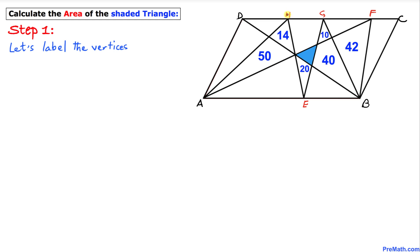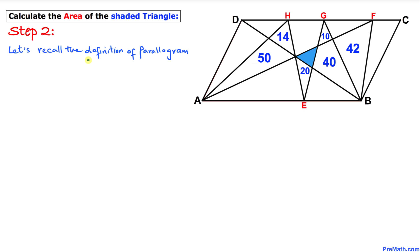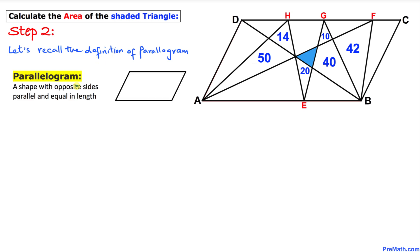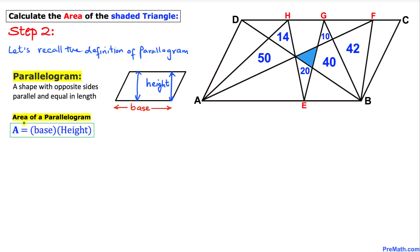Let's recall the definition of a parallelogram: a shape with opposite sides parallel and equal. This side is opposite and equal to the other side, and they are parallel. Likewise, this side is equal to its opposite side and also parallel. This side is the base of the parallelogram, and this is the height. The area of a parallelogram is always equal to base times height.